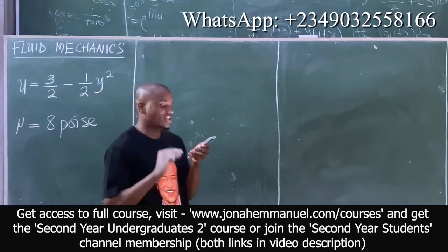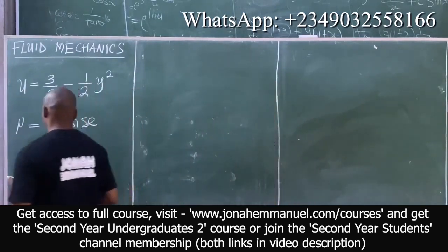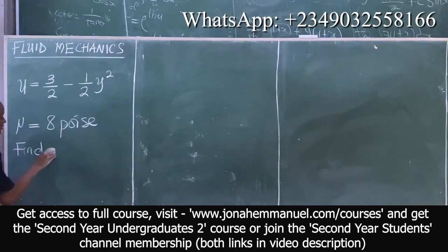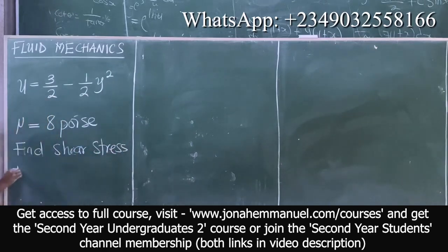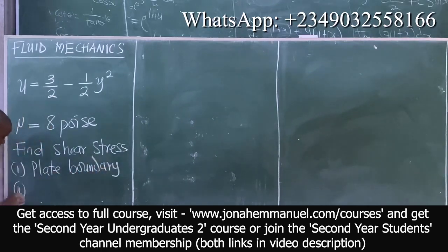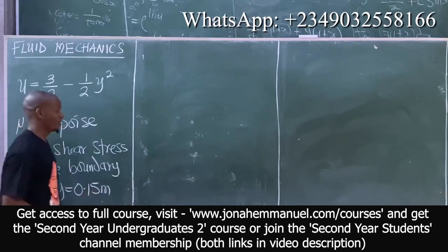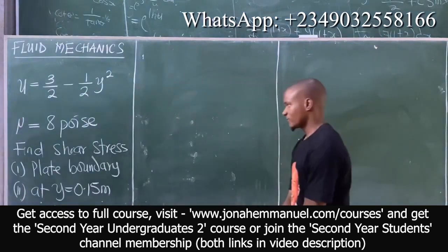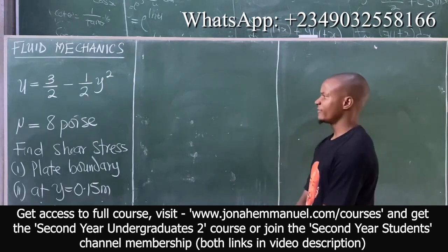It says: find the shear stress at the plate boundary — that's number 1, find shear stress at plate boundary. Number 2, it says at Y equal to 0.15 meters. So we are asked to find the shear stress at the plate boundary and at Y equal to 0.15 meters. How do we solve it?